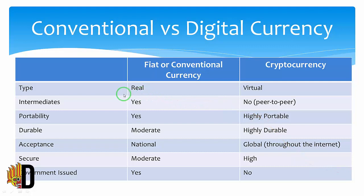You can see that conventional currency type is real, but cryptocurrency type is virtual. Conventional currency has an intermediary, but cryptocurrency does not. Conventional currency durability is moderate, while cryptocurrency is highly durable.